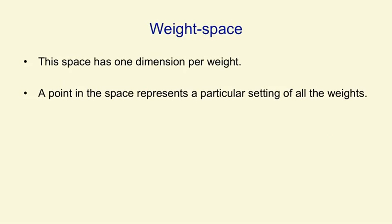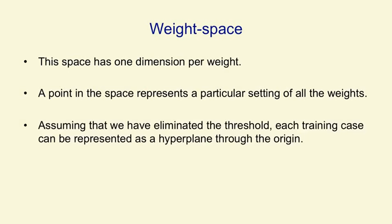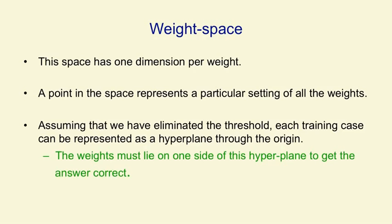So we're going to start off by thinking about weight space. This is a space that has one dimension for each weight in the perceptron. A point in the space represents a particular setting of all the weights. Assuming we've eliminated the threshold, we can represent every training case as a hyperplane through the origin in weight space. So points in the space correspond to weight vectors, and training cases correspond to planes. And for a particular training case, the weights must lie on one side of that hyperplane in order to get the answer correct for that training case.